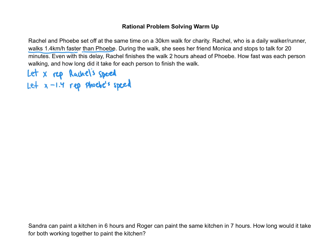During the walk, Rachel sees her friend Monica and stops to talk for 20 minutes. So whatever Rachel's time would be, we have to add on 20 minutes. And even with the delay, Rachel walks two hours ahead of Phoebe. She finishes two hours ahead of her, which means Rachel's time, along with the 20-minute talk, along with the two hours, if we add all of those up together, then we'll get Phoebe's time. So Rachel's time plus 20 minutes out of 60, so a third of an hour, plus the two hours, all of that will give us Phoebe's time.